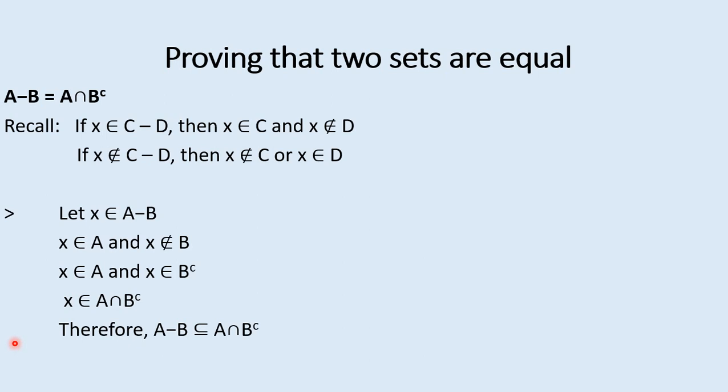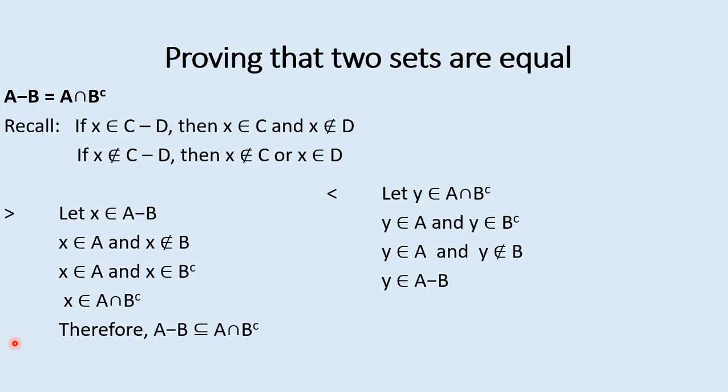Now for the reverse: let Y be in A intersect B complement, meaning Y is in A and Y is in B complement. If Y is in B complement, then Y is not in B. So Y is in A and Y is not in B, which means Y is in A minus B. Therefore the right-hand side is a subset of the left-hand side, and since both are subsets of each other, they are equal.